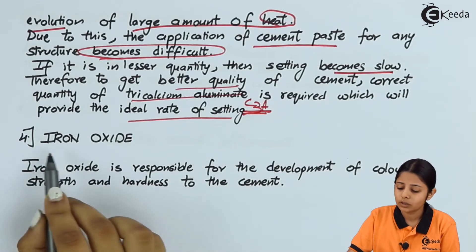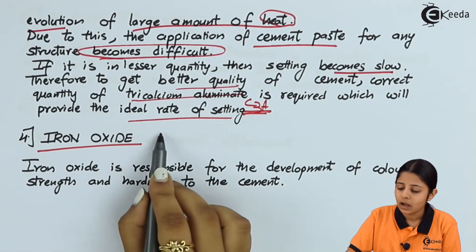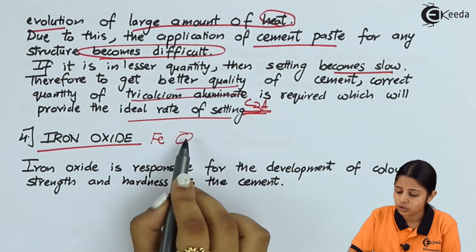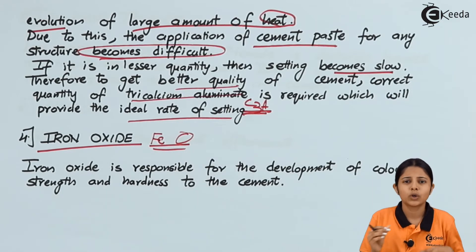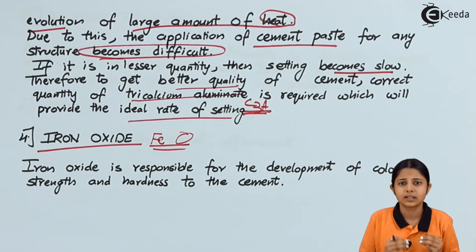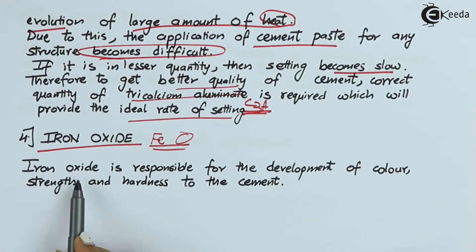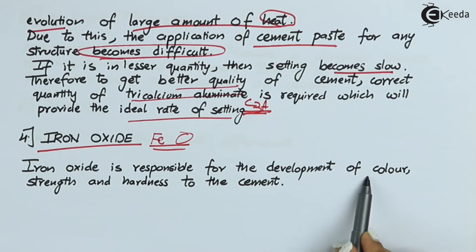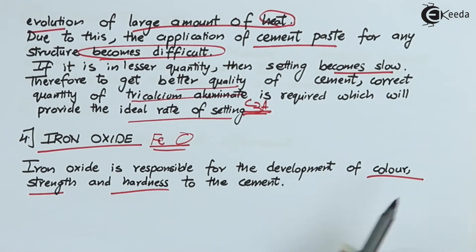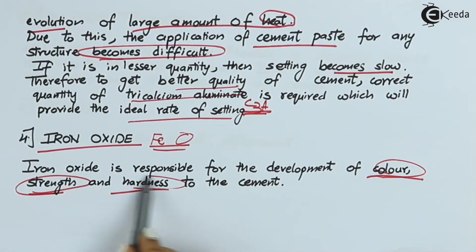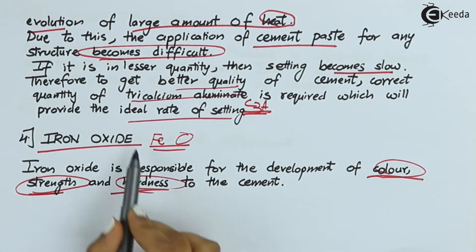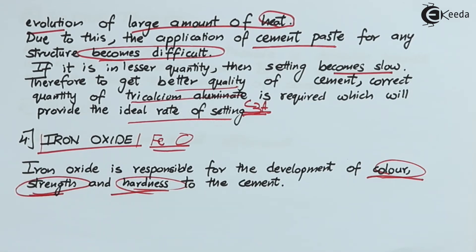The fourth ingredient is iron oxides (Fe + oxygen). There are certain amounts of iron oxides present in cement, though they are very small in quantity. Iron oxide is responsible for the development of color, strength, and hardness of cement — all three are very important. However, iron oxides are barely 2–3% of the total quantity and are not present in large amounts.